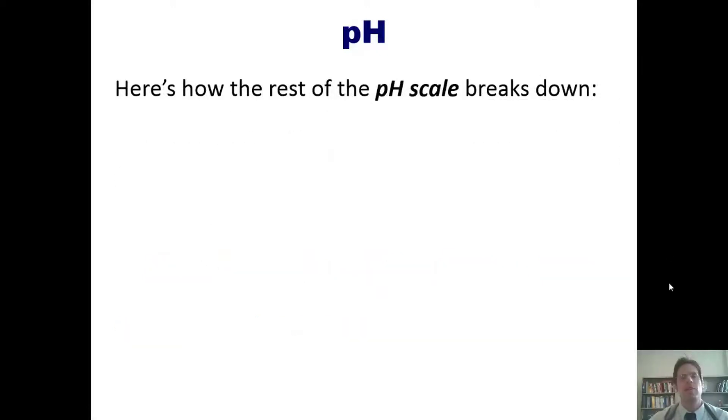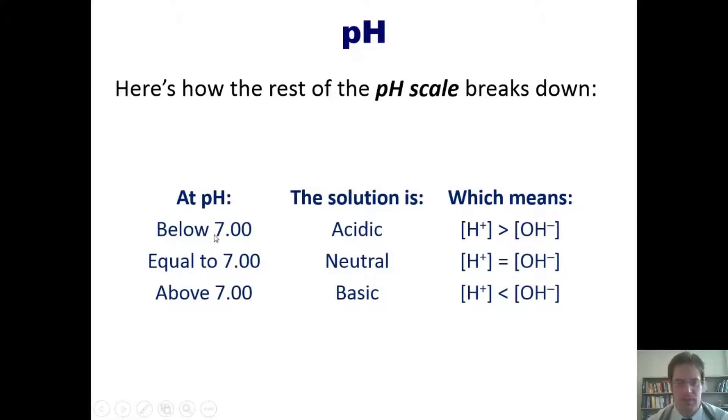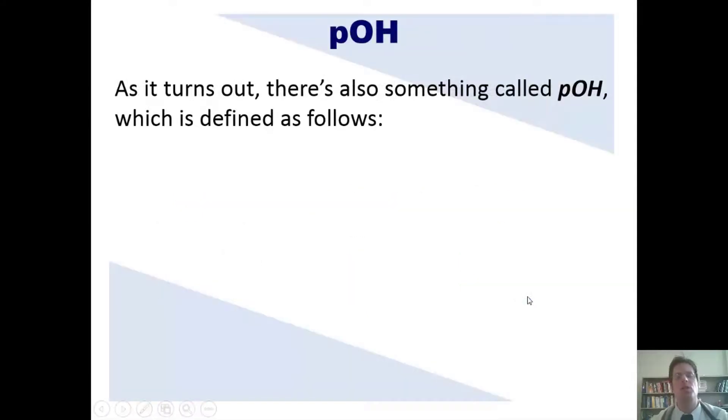Here's how the rest of the pH scale breaks down. If your pH is below 7, then your solution is acidic. In that scenario, the concentration of H+ or H3O+ is larger than the concentration of hydroxide. At pH 7, you're at neutral pH where the concentrations of these two species are equal. Above 7, you're at basic pH where the concentration of hydroxide is larger than the concentration of hydronium.